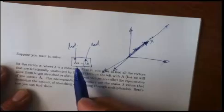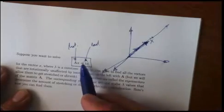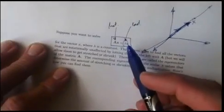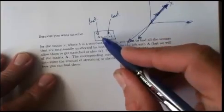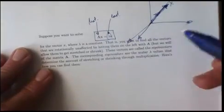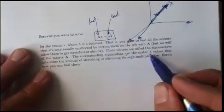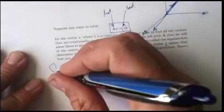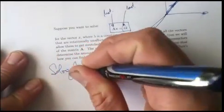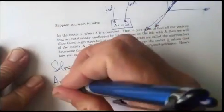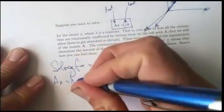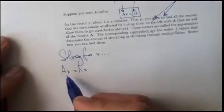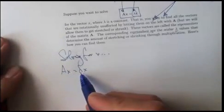We want to find, if you're given a matrix A, sometimes it'll be important to know what are the possible values of vectors called eigenvectors and what are the possible eigenvalues that go along with those vectors. So solving for x, we have A x equals lambda x. Remember A is a matrix, x is a column vector, lambda is a constant.